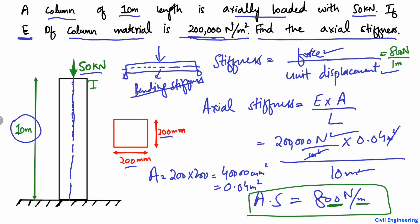So, if you want to produce one meter of deformation in this column, 800 newton — or 0.8 kilonewton — of force is required. This was the lecture about axial stiffness and its numerical calculation.